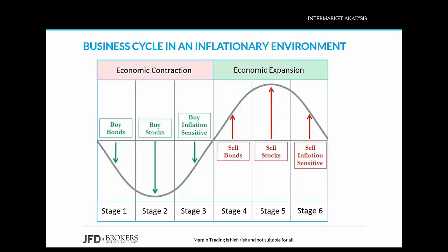Let's go through the business cycle in an inflationary environment. Business cycles are divided into two phases: the expansion phase and the contraction phase, and they have six stages. Stage one shows the economy contracting, with bonds moving upwards as interest rates decline through loose monetary policy — such as quantitative easing or lower interest rates. Stage two is the bottom of the economy and the stock market. Although economic conditions have stopped getting worse, the economy is still stagnant.